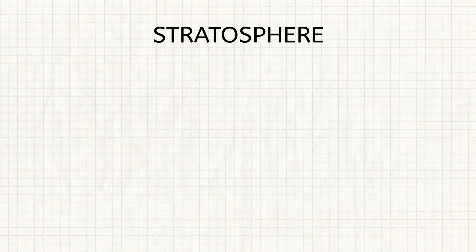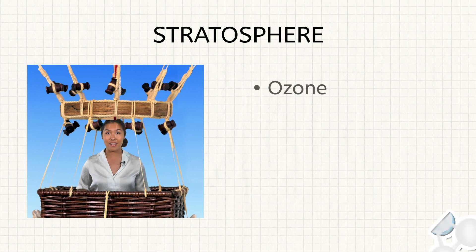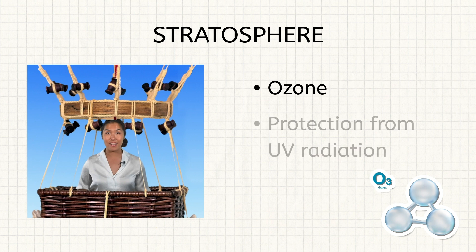Next, we saw the stratosphere. You can think of this as our sunscreen layer. The ozone gas found up here is really good for us — it helps protect us from the sun's UV radiation.